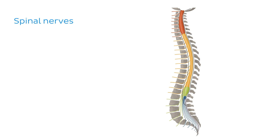We know the spinal nerves L4 to S4 contribute to the sacral plexus, but let's have a look at these in a bit more detail so we know exactly which parts of these nerves are involved here. As the spinal cord travels inferiorly through the vertebral canal, it gives rise to a pair of spinal nerves at every vertebral level.